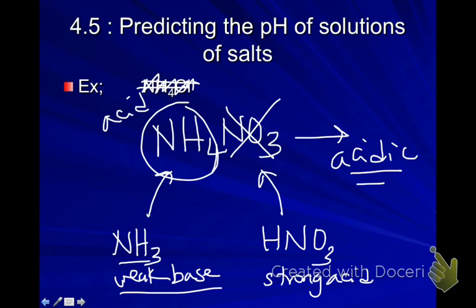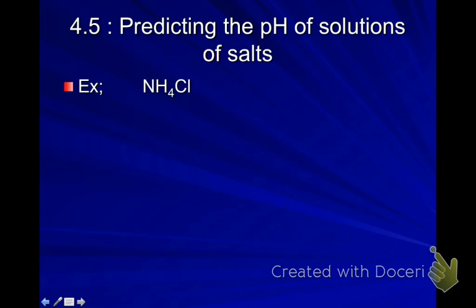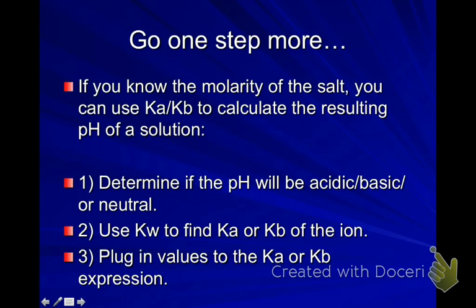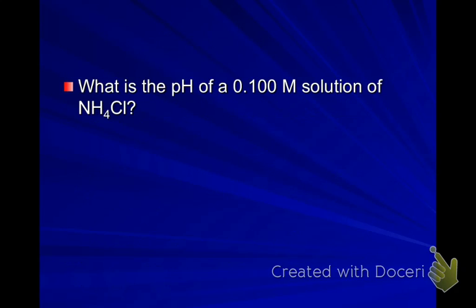All right, so now let's go one step farther. If you know the molarity of the salt, you can actually use Ka and Kb to calculate the resulting pH, like a number. So here's our three steps. Determine if the pH will be acidic, basic, or neutral, like we've been doing. Two, we're going to use KW to find Ka or Kb of the ion, whether it's a conjugate acid or conjugate base. And then three, we're going to plug in the values to the Ka or Kb expression, and then we can get a number value.